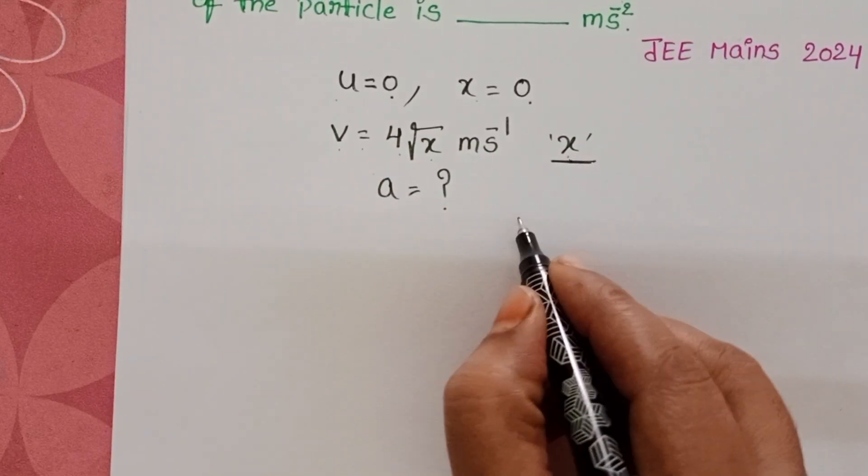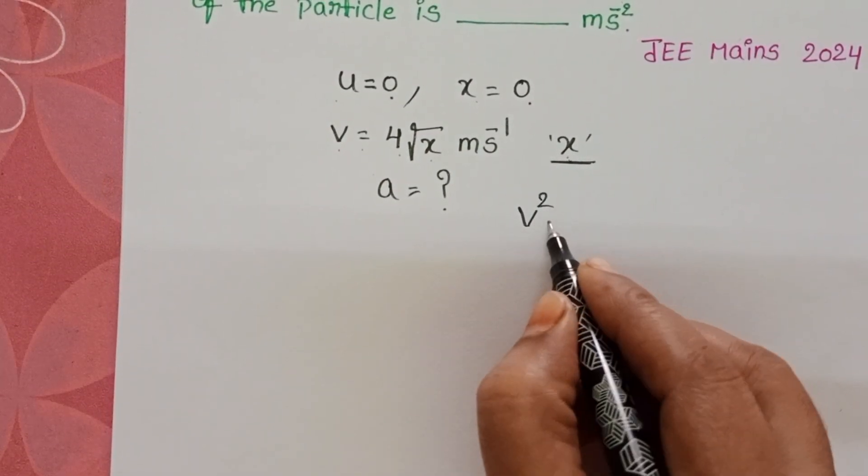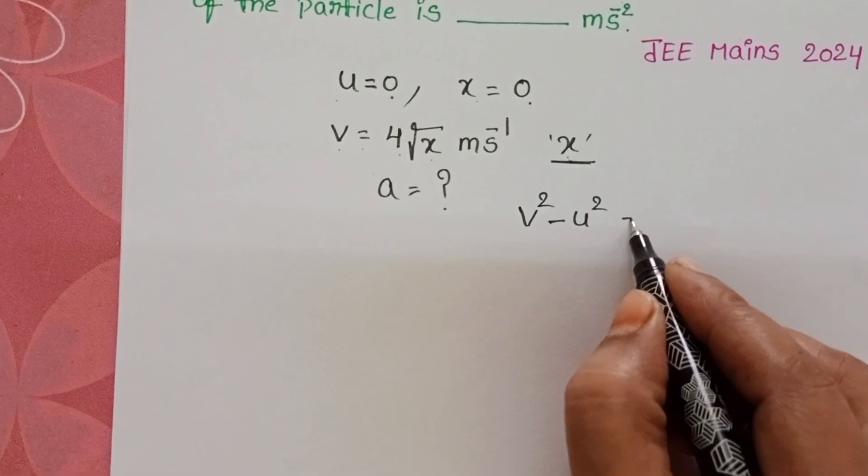Take equations of motion. v square minus u square equals 2as.